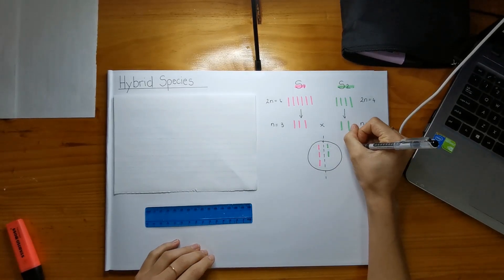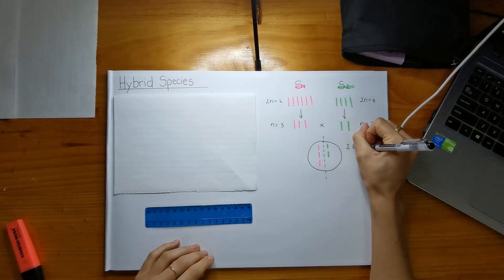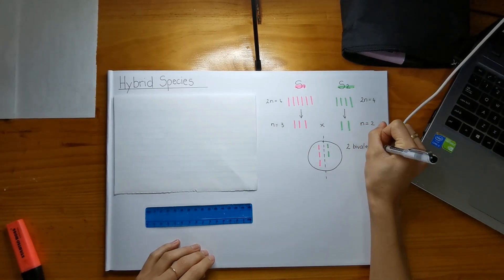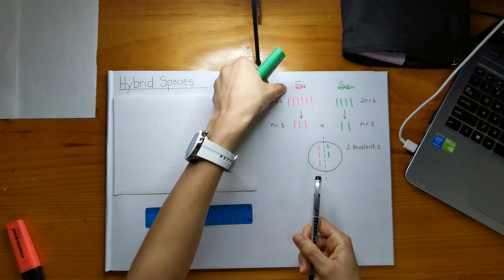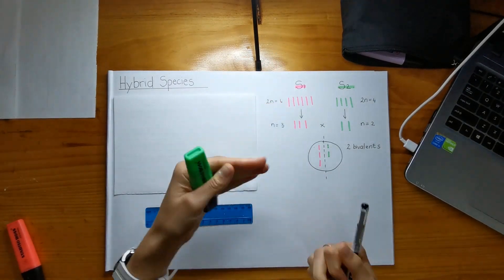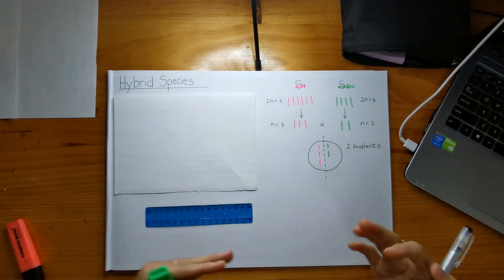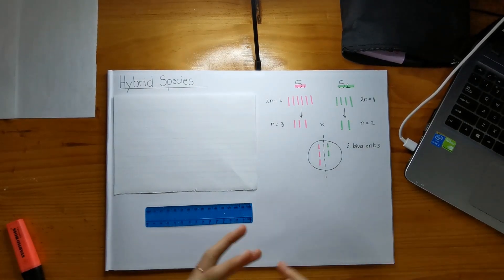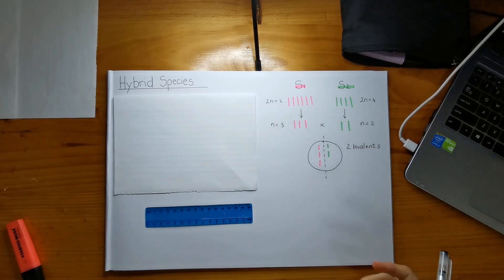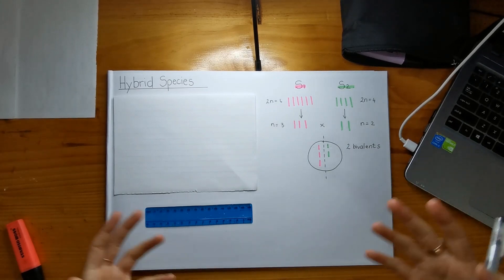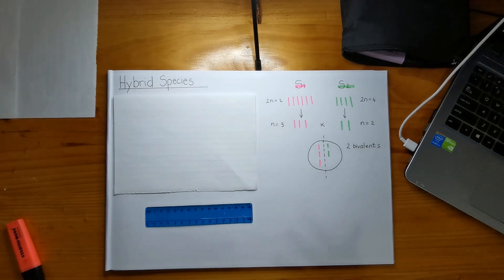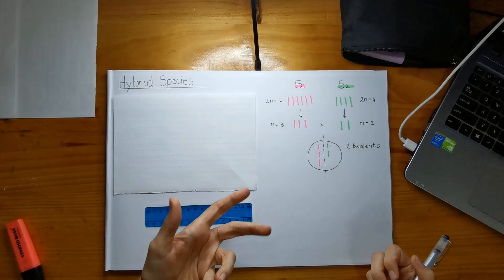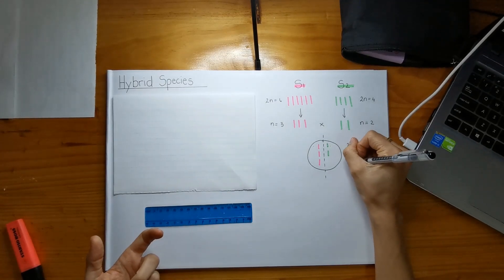And these two chromosomes were able to pair up as well and also form a bivalent. So we have two bivalents. But because species 1 had more chromosomes to start off with, and because species 2 doesn't have enough chromosomes, as much as species 1, that there was a leftover chromosome of species 1 in the new hybrid species. So that's why it's one univalent.